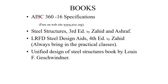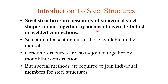The first reference is AISC 360, the American Institute of Steel Construction specifications, which you can download from their website. The second is the steel structures book by Zahid Amasadiki and Ashraf. We also use LRFD Steel Design Aids for designing steel members like tension members, compression members, steel columns, and steel beams. Another reference is Unified Design of Steel Structures by Louis. These are the books you should have for this course.